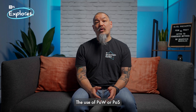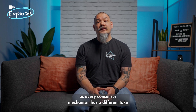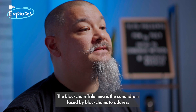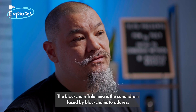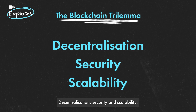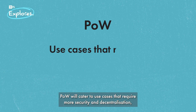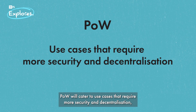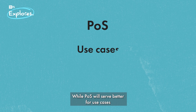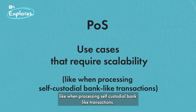The use of POW or POS is largely dependent on the target use case for a particular blockchain, as every consensus mechanism has a different take on solving the blockchain trilemma. The blockchain trilemma is the conundrum faced by blockchains to address three challenges simultaneously: decentralization, security, and scalability. POW will cater to use cases that require more security and decentralization, like a cryptocurrency used as a store of value, while POS will serve better for use cases that require scalability, like processing self-custodial bank-like transactions.